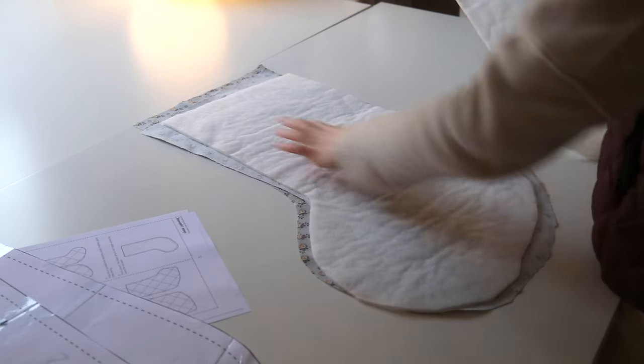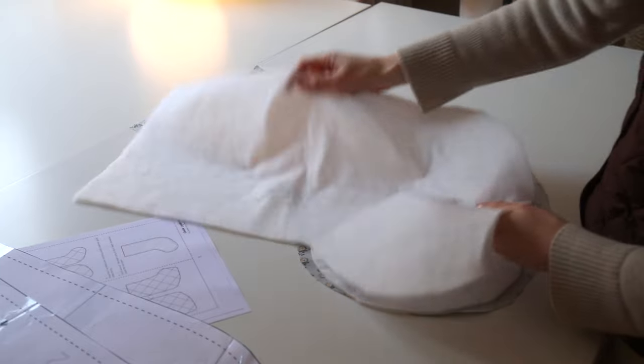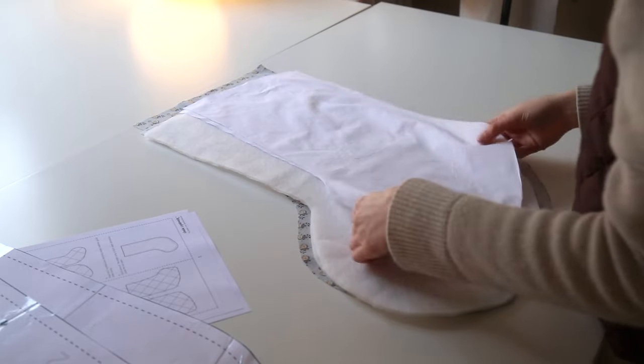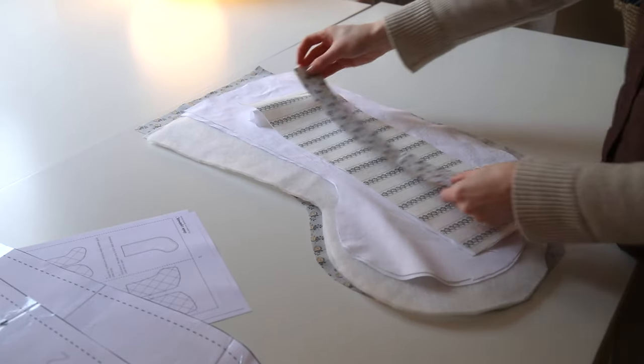I then cut two pieces of wadding also on the mirror image so that should be everything cut out now and ready to make the stocking.